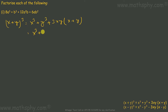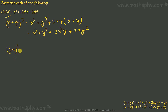This can also be written as x cube plus y cube plus 3xy squared. Now for the first problem, in place of 8a cube I write 2a whole cube, and b cube remains as is. So here x is 2a and y is b — x, y, x cube, y cube.